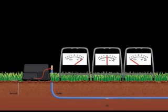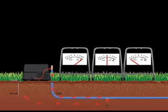A ground fault locator uses a high voltage signal to detect the location of a ground fault. The locator sends the signal down the wire and it exits at the fault and enters the earth. The signal then returns back to the ground stake. The ground fault locator uses this returning signal to pinpoint the fault.